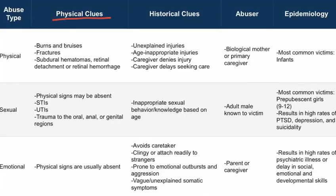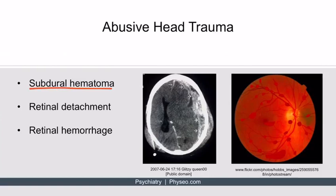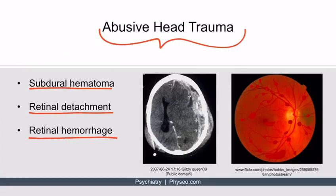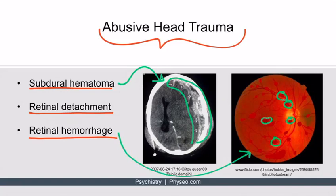Physical clues may also come in the form of subdural hematomas, retinal detachment, or retinal hemorrhages — all signs of abusive head trauma. The left image demonstrates a subdural hematoma, showing a collection of blood in the subdural space. The right image shows retinal hemorrhages — small collections of blood from the retinal vasculature. These retinal hemorrhages most often result from baby shaking, or shaken baby syndrome.